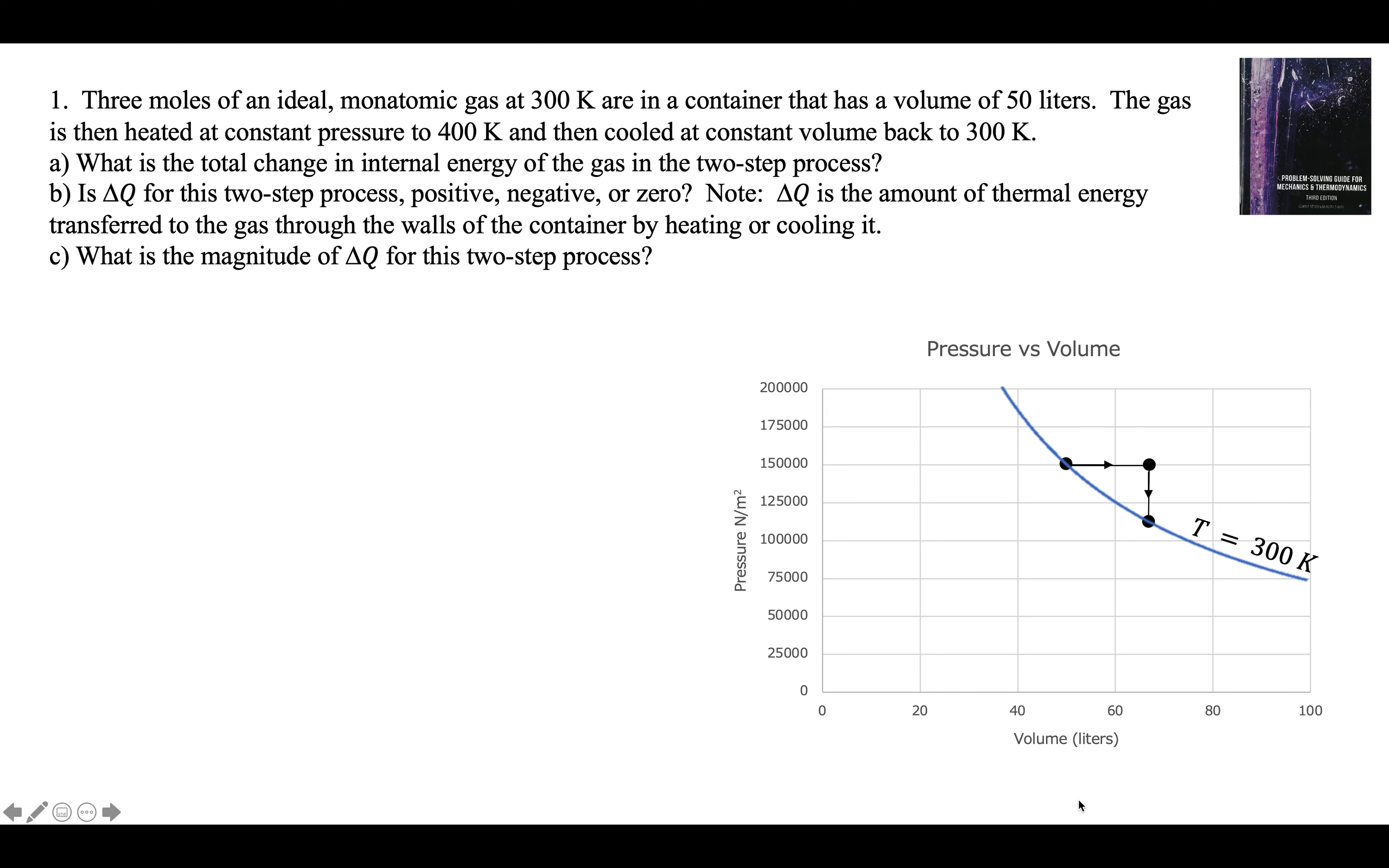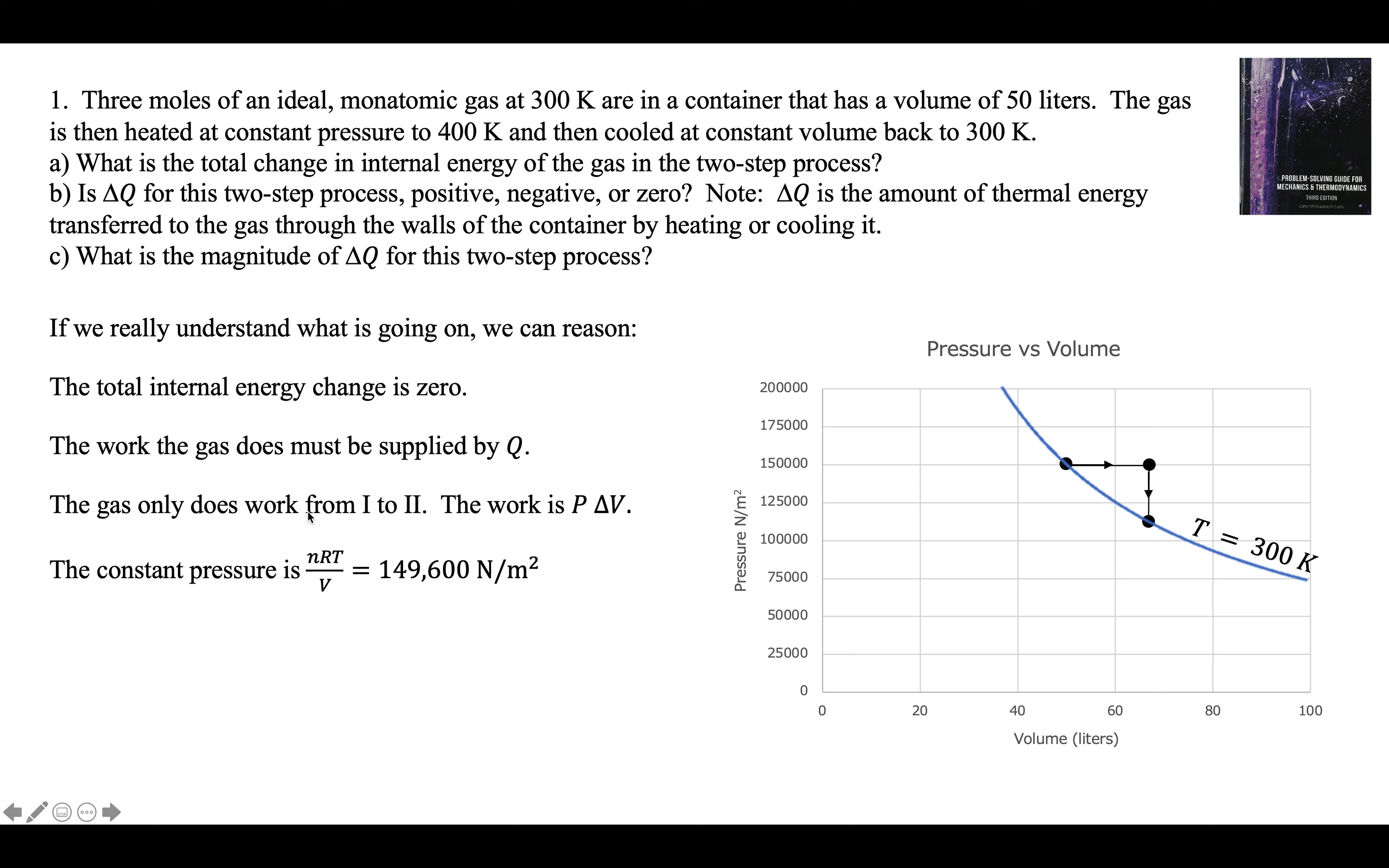If we really understand what's going on after doing a large number of these problems, we can do it all in just one slide. The total internal energy change is zero. It starts at 300, ends up at 300. The work the gas does must be supplied by Q, by putting thermal energy in. The gas only does work from 1 to 2. The work is P delta V. We can calculate the pressure from the ideal gas law, nRT over V. We get 149.6.